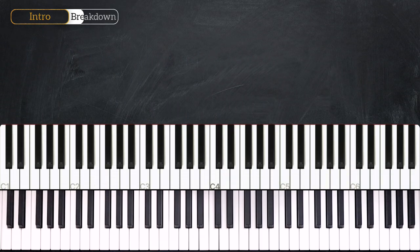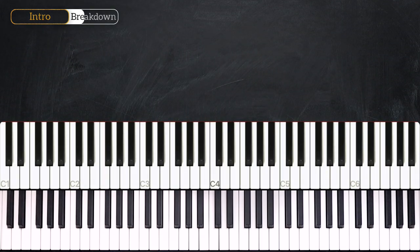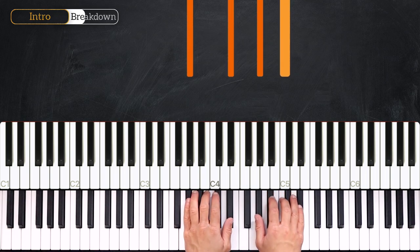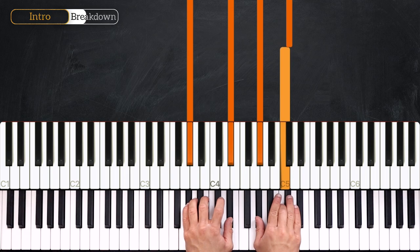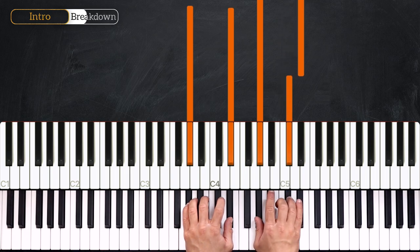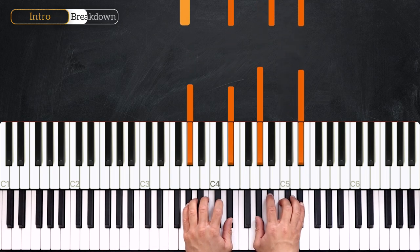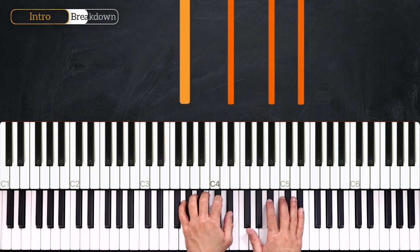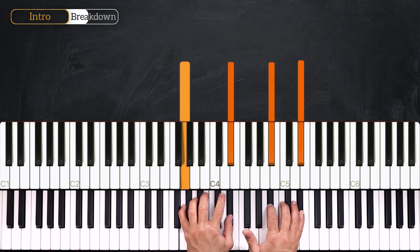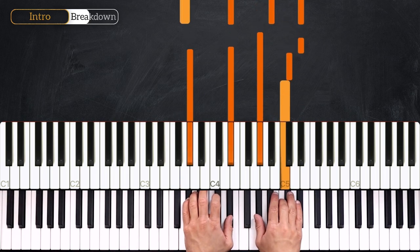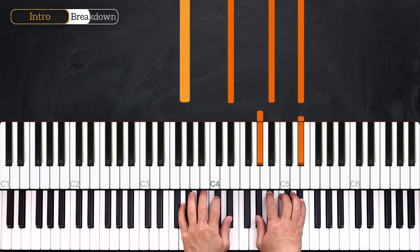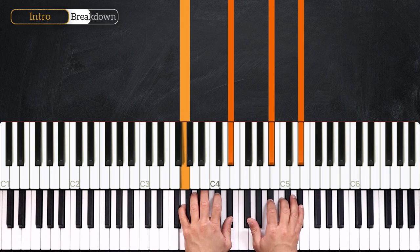Alright, so now let's learn the introduction. We start on the Ab major chord. Then we'll play the melody on the right hand. Playing Db, Eb into the next chord which is Eb. So it goes 1, 2 and 3. Very good!